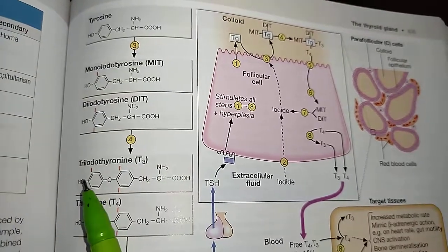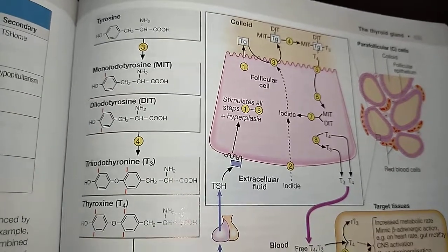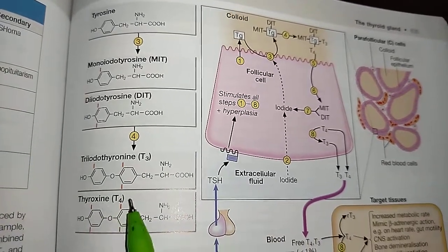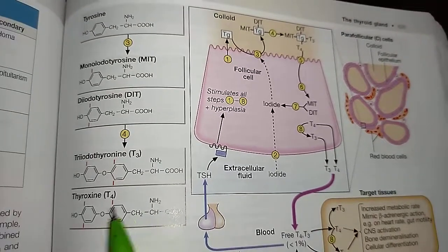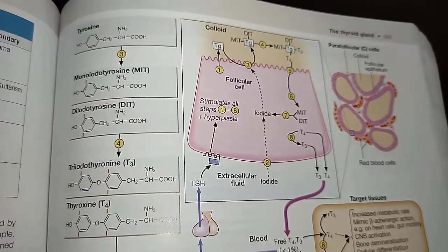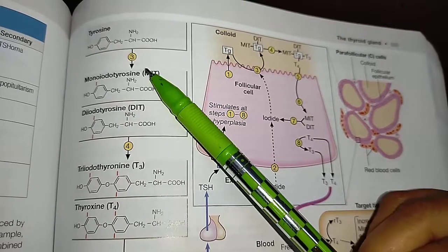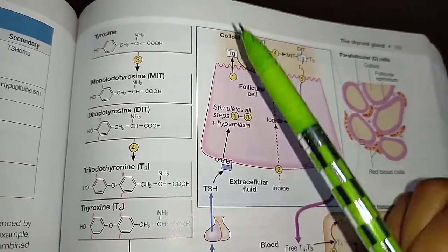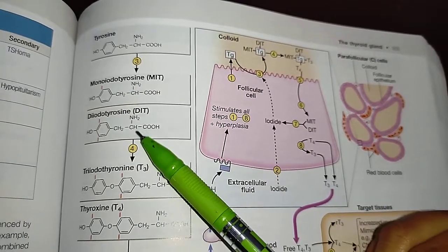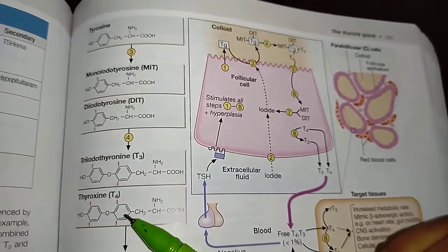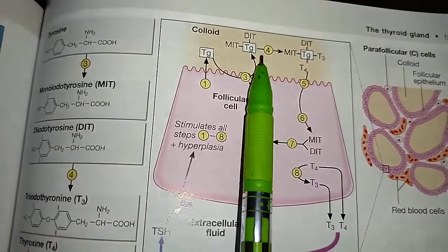Diiodotyrosine (DIT) gets converted into triiodothyronine (T3), which is the main active thyroid hormone, and thyroxine (T4), which is the tetraiodothyronine. T3 has three iodine molecules and T4 has four. So the sequence is: thyroglobulin tyrosine → MIT → DIT → T3 → T4.